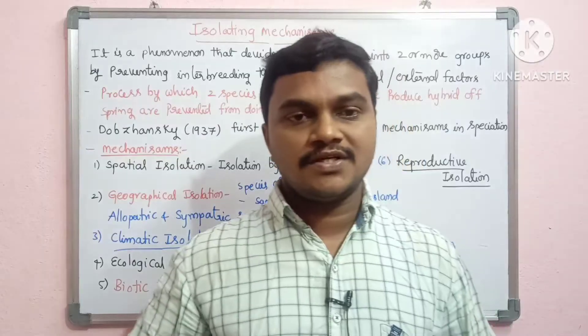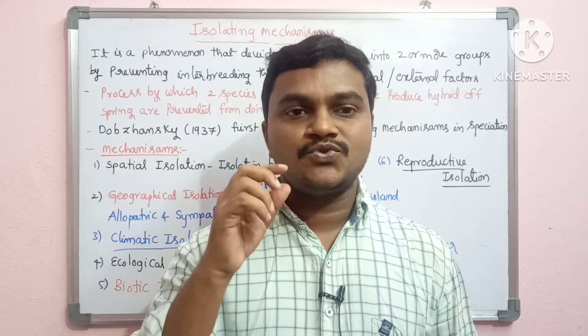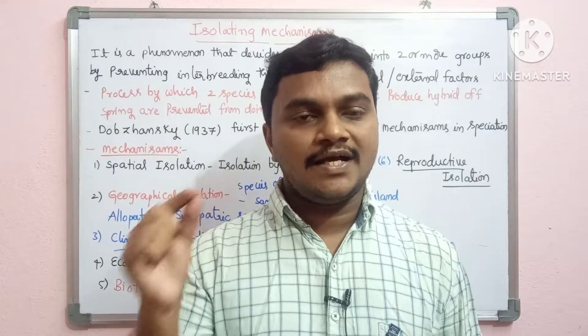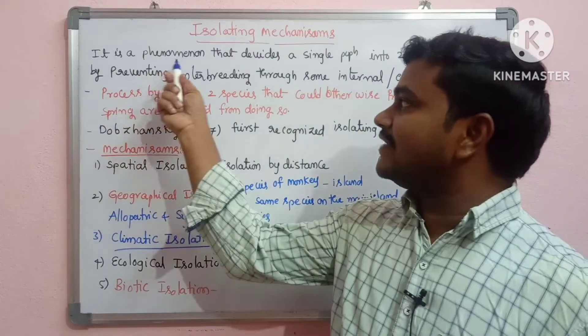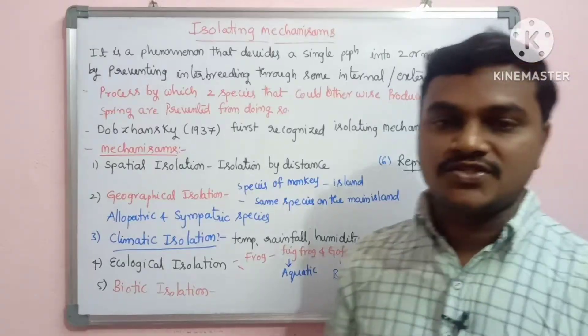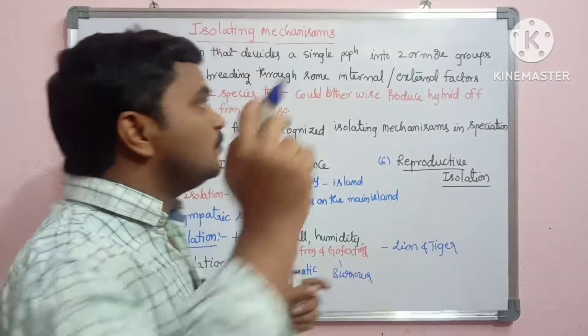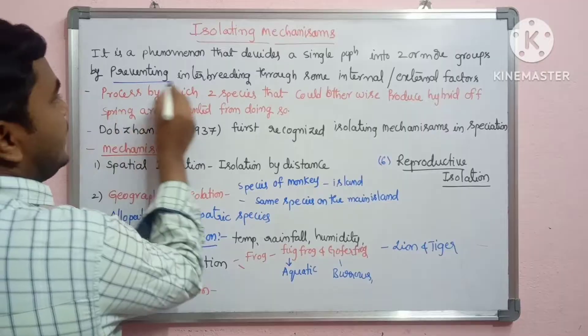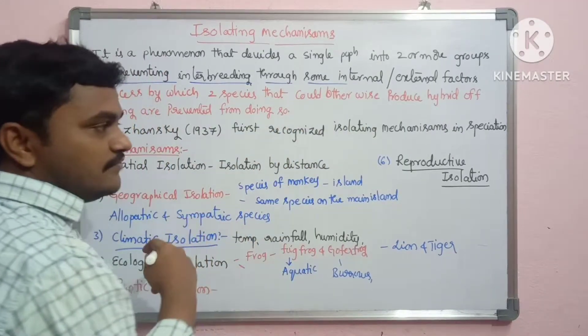Students, please subscribe and like if you are watching for the first time. Here we are going to discuss isolation mechanisms. First of all, what is isolation? The definition: it is a phenomenon that divides a single population into two or more groups by preventing interbreeding through some internal or external factors.